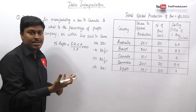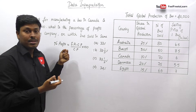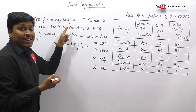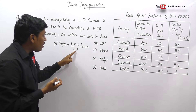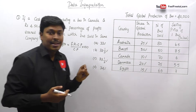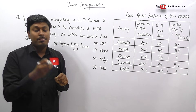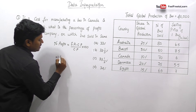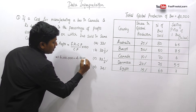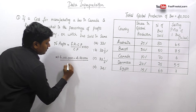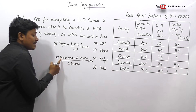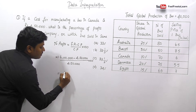We need to find the percentage of profit earned. Selling price minus cost price, divided by cost price, into 100. The cost price is 4,50,000. The selling price of Canada is 6 lakh. So: 6 lakh minus 4,50,000 divided by 4,50,000 into 100. That gives us 1,50,000 divided by 4,50,000 into 100.